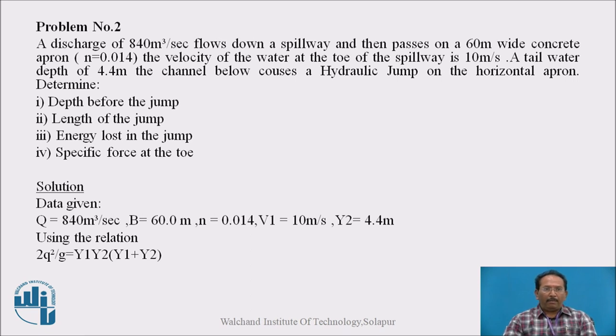This is a very important problem. Read the problem once again and write down the data given in the problem. Here particularly in this problem, n is given to us. N is a Manning's constant. That means we are going to use the Manning's formula particularly in this equation to find the velocity. The Manning's formula is v is equal to 1 upon n, R raised to 2 third, S raised to half. R is hydraulic mean depth and S is a channel bottom slope. So data given: Q is equal to 840 meter cube per second, width is 60 meter, n is 0.014, velocity 1 that is 10 meter per second, and y2, y2 is given to us 4.4 meters. We have to find out here y1 now.